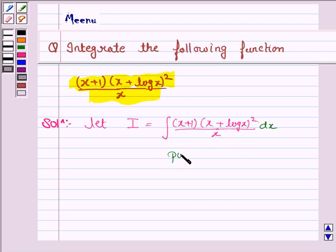So put t equal to x plus log x. So dt by dx is equal to 1 plus 1 upon x. Taking LCM, this becomes x plus 1 upon x.